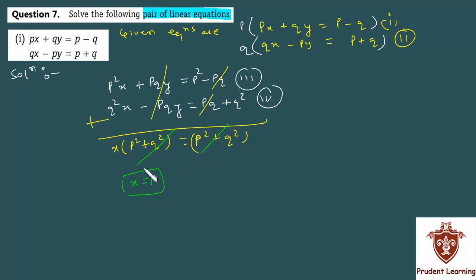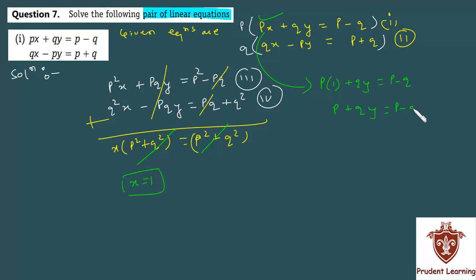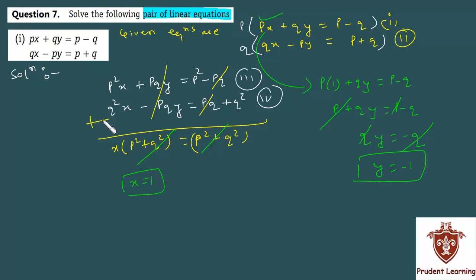Now, substituting the value of x in the first equation — putting x equal to 1 — we get P into 1 plus Qy is equal to P minus Q, which gives P plus Qy equal to P minus Q, so Qy equals minus Q, and y equals minus 1. So the solutions are x equal to 1 and y equal to minus 1. This completes our solution.